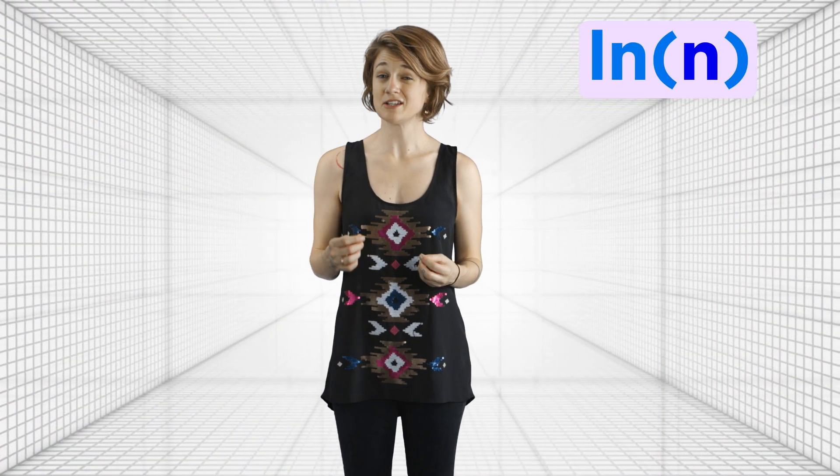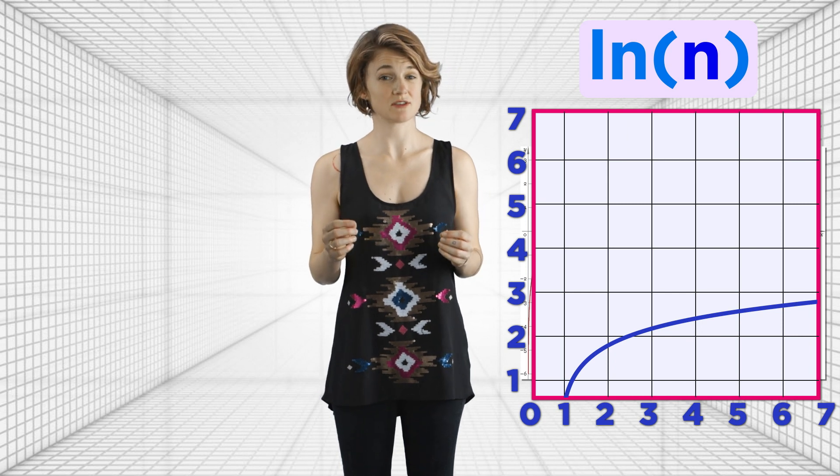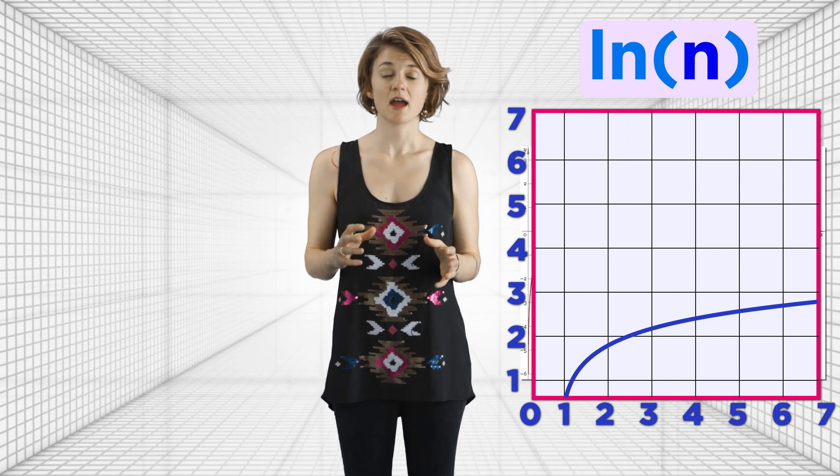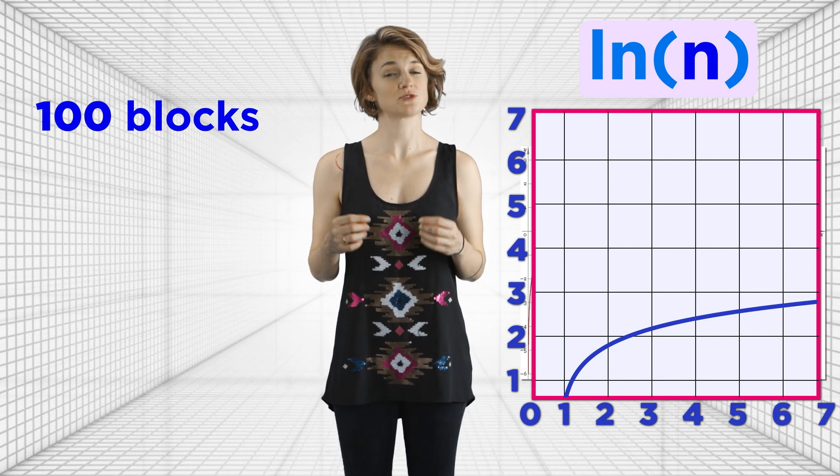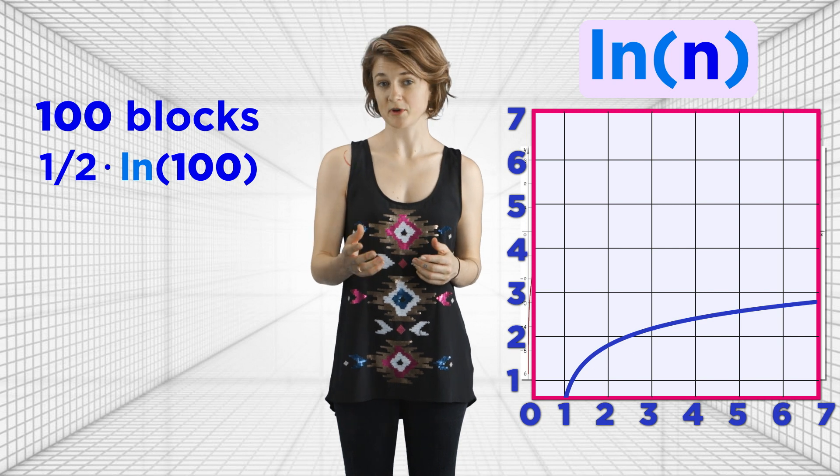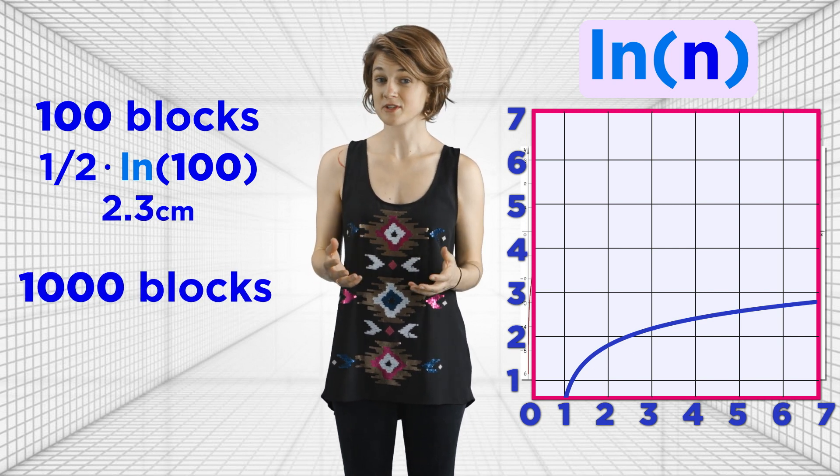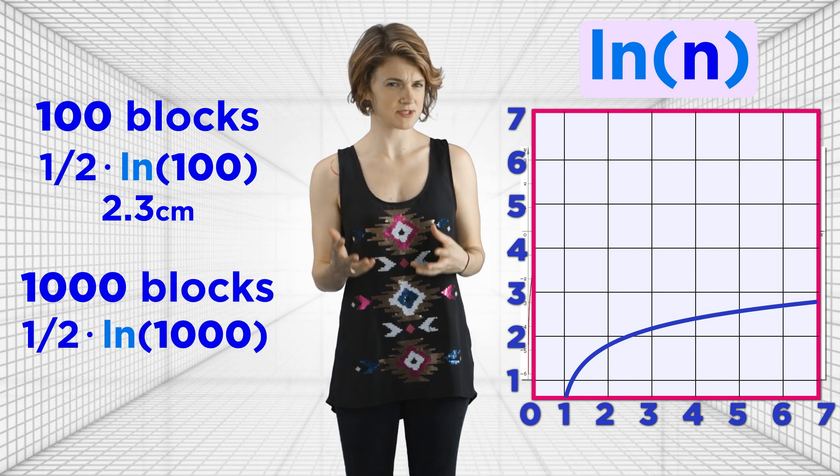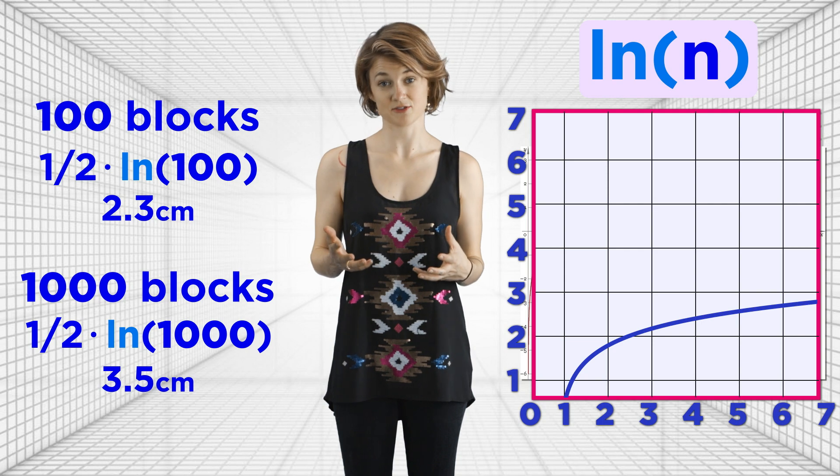The natural log is the inverse of exponentiation. And the graph of the natural log function looks like this. It grows really slowly. So, after we balance 100 blocks on the table, the bridge is roughly ½ times the natural log of 100, or 2.3 centimeters over the edge. After 1,000 blocks, it's roughly ½ times the natural log of 1,000, or 3.5 centimeters over the edge.